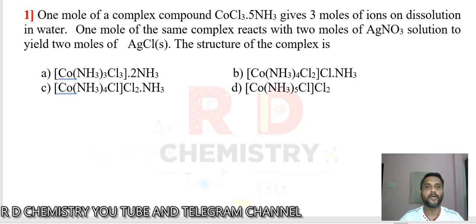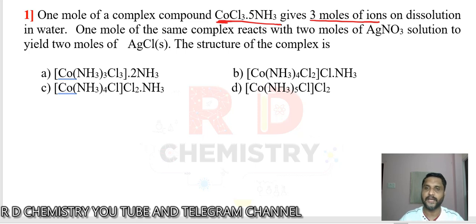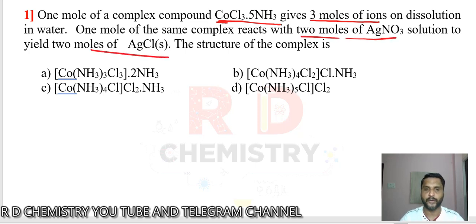Question number 1. 1 mole of a complex compound CO, Cl3 and 5 amine ligands gives 3 moles of ions in solution. The counter ion or the ligand are not given separately, so it will give 3 ions in solution. 1 mole of this complex reacts with 2 moles of silver nitrate solution to form 2 moles of silver chloride. The structure of the complex is?